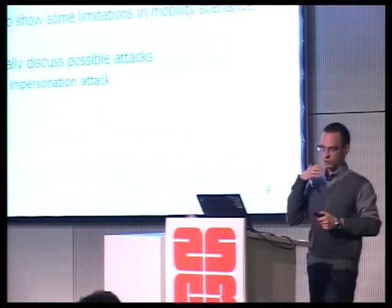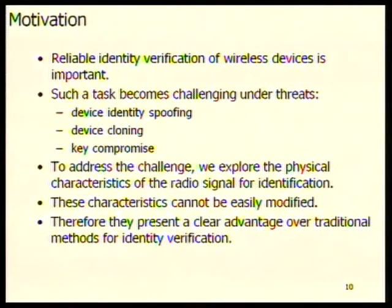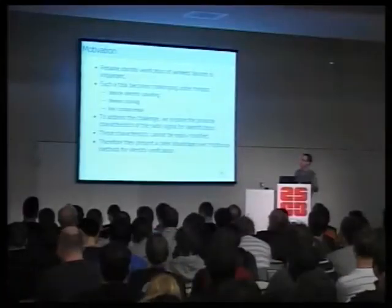We decided to go a step further: can we distinguish based on these characteristics even identical devices — same hardware, same model, same specification? The motivation was to have reliable identity verification of wireless devices — to detect illegal transmitters, detect MAC address spoofing, or address device cloning and key compromise. That's why we dug into the physical layer. These characteristics come from hardware imperfections, and it's very hard for a manufacturer to make all devices produce identical signals — much like human fingerprints.